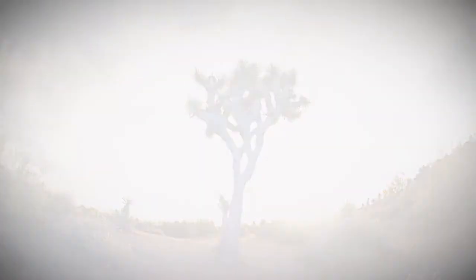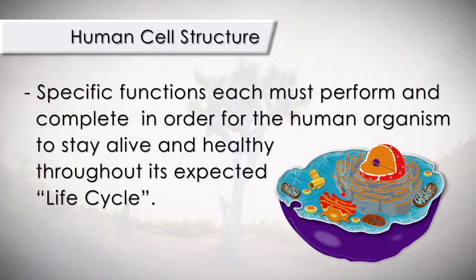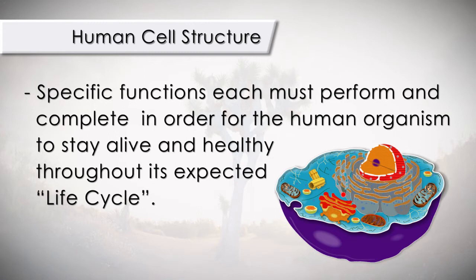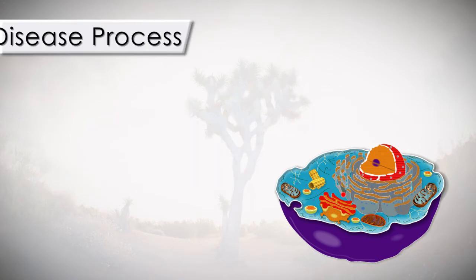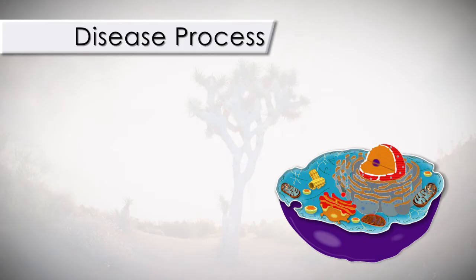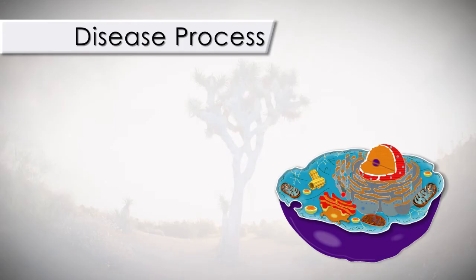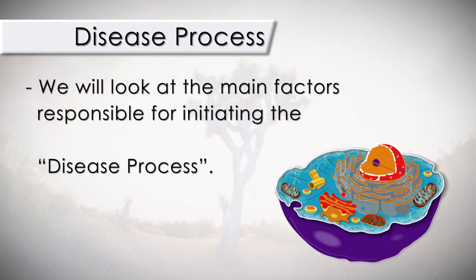In this series, we will learn about the human cell structures and their specific functions each must perform and complete in order for the human organism to stay alive and healthy throughout its expected life cycle. In addition, we will discuss the disease process, which is essentially a dysfunction that can occur at any time when any of the six basic functions of a healthy organism is negatively impacted. We will look at the main factors responsible for initiating the disease process.